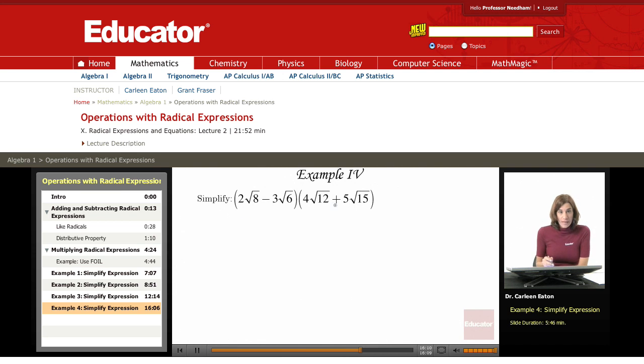We're asked to multiply a binomial, but there's no special formula for this one. I just have to use FOIL, multiplying first, outer, inner, and then last.